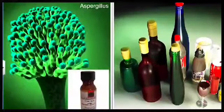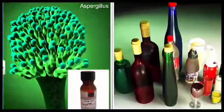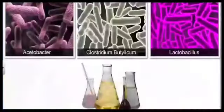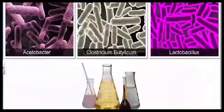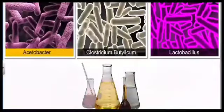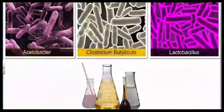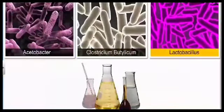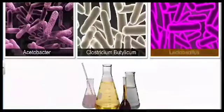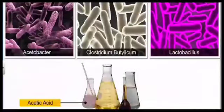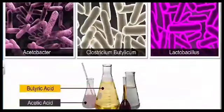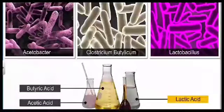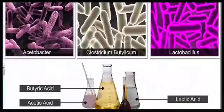Now let us see some other microbes like Aspergillus, a fungus is used in producing citric acid which is used in so many soft drinks. Likewise, bacteria like Acetobacter, Clostridium butylicum, Lactobacillus have been used in producing many organic acids like acetic acid, butyric acid, lactic acid respectively.